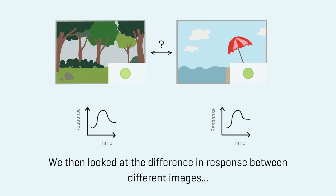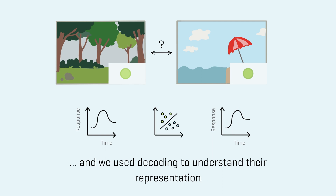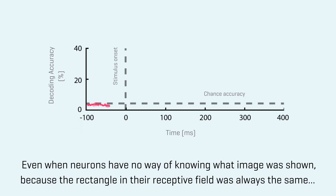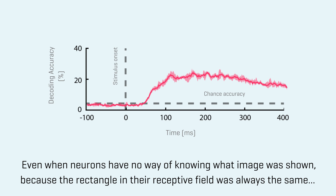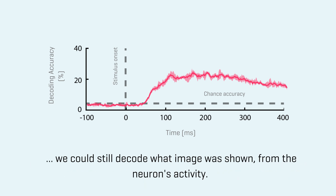We then looked at the difference in response between different images, and we used decoding to understand their representation. Even when neurons had no way of knowing what image was shown — because the rectangle in their receptive field was always the same — we could still decode what image was shown from the neuron's activity.